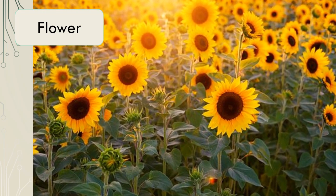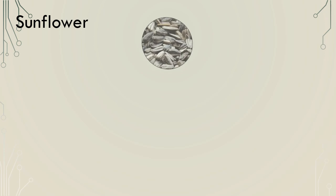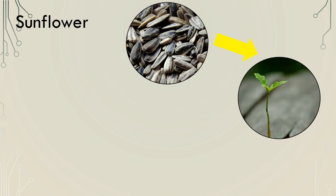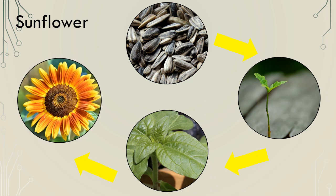Many plants produce flowers which make their own seeds. Let's have a look at the sunflower life cycle. The sunflower life cycle will begin with a seed. This is planted and in the right conditions will germinate and grow into a seedling. The seedling will continue to grow into an adult plant, which will then flower and produce its own seeds ready for the life cycle to begin again.